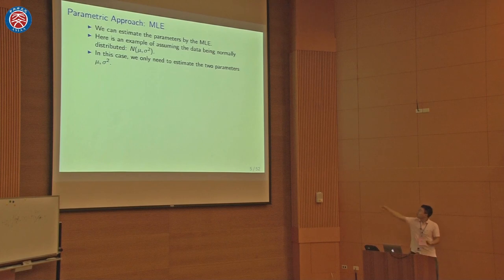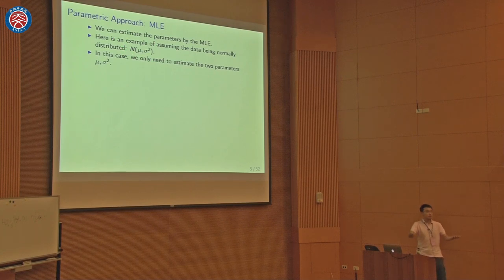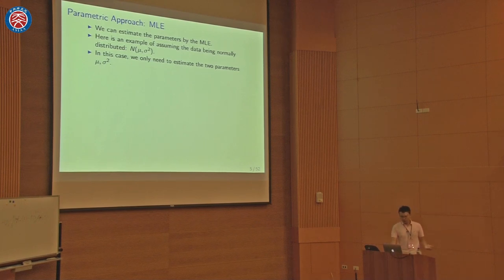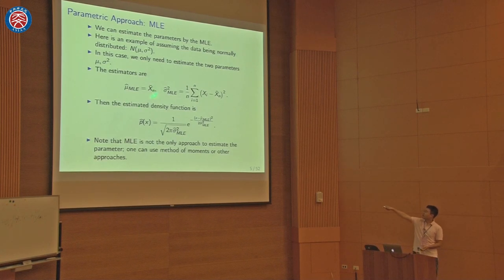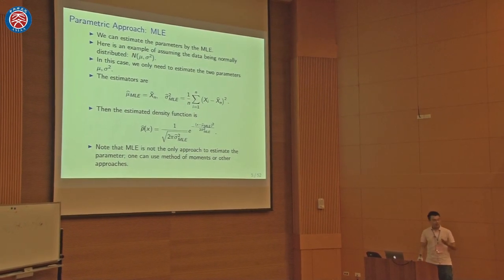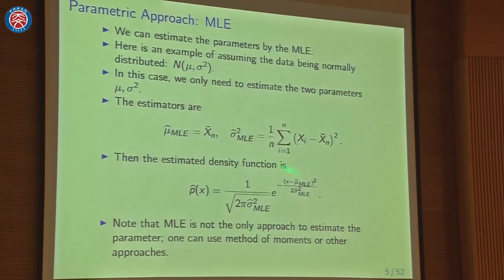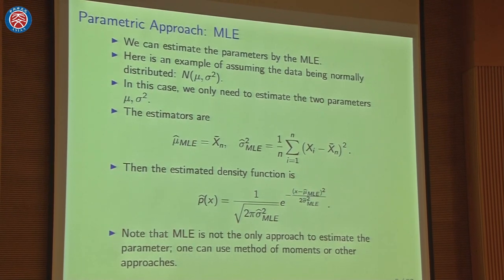For example, if we assume the density function is normally distributed with mean mu and variance sigma-squared, all we need to do is estimate these two parameters, then plug them into the PDF form of the normal distribution to get our density estimate. In the case of MLE, the mean parameter is estimated using the sample mean, and this is the MLE for the variance parameter. So the estimated density function is just this form — the normal distribution with sigma-squared and mu replaced by their MLEs.